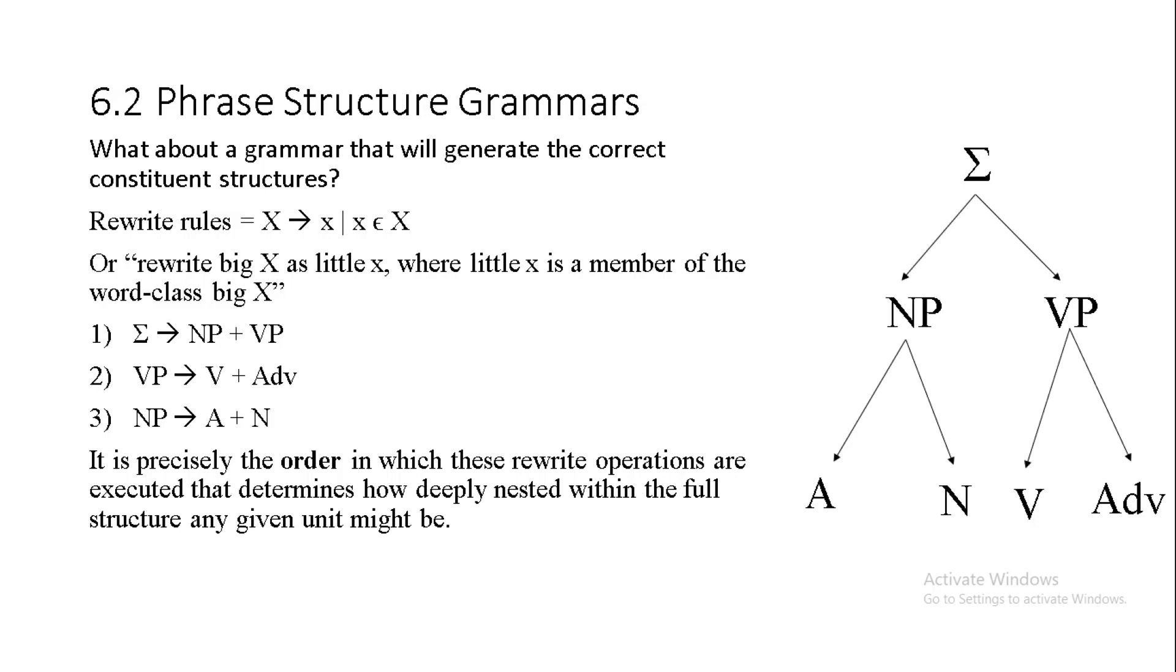What about though a grammar that will generate the correct constituent structures rather than just the correct sequence of surface level symbols? Well, we can find this actually through positing the following rewrite rule introduced in chapter 4 as now explicitly thought of as rules of the form rewrite big X as little x where little x is a member of the word class big X. This established we can see that the rewrite rule for a sentence is to rewrite it as noun phrase plus verb phrase. The rewrite rule for a verb phrase is to rewrite it as verb plus adverb, etc. It is precisely though the order in which these various rewrite operations are executed which will determine how deeply nested within the full structure any given unit might be.